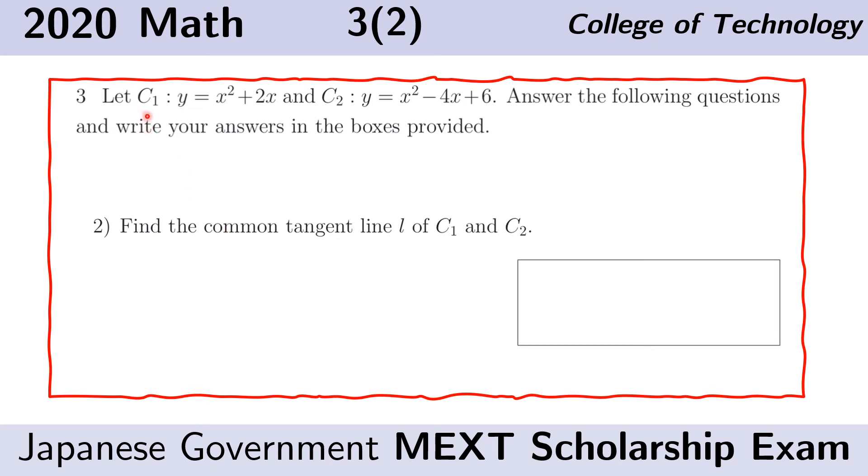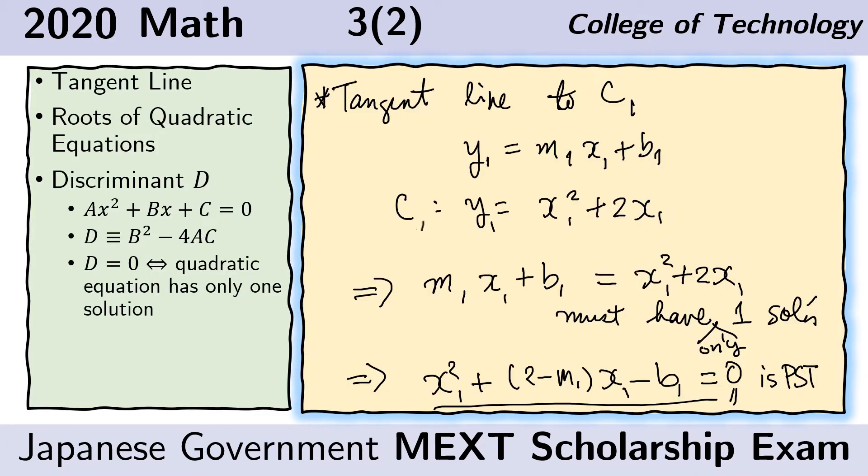Here we are given, again, two curves, C sub 1 and C sub 2, and we are asked to find the common tangent line L. Our strategy is to first find the tangent line of C sub 1, and then we find the tangent line of C sub 2. Then we make sure that both lines are the same, and so we equate their slopes and their y-intercepts.